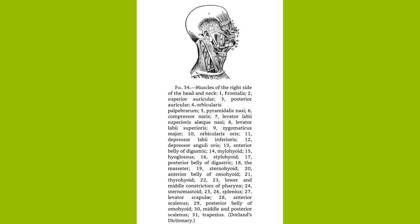Muscles of the Neck. Before speaking of the muscles of the back, a few of those of the neck had best be taken up. They are numerous, but mostly of minor importance. Largest and most important is the sternocleidomastoid muscle, which has its origin on the upper part of the sternum and the inner third of the clavicle, and is inserted into the mastoid process of the temporal bone. It passes obliquely across the side of the neck and serves to flex the head to the side and to draw the face in the opposite direction. When both muscles contract, the head is flexed on the neck and the neck on the chest. In wryneck, or torticollis, this muscle is constantly contracted.